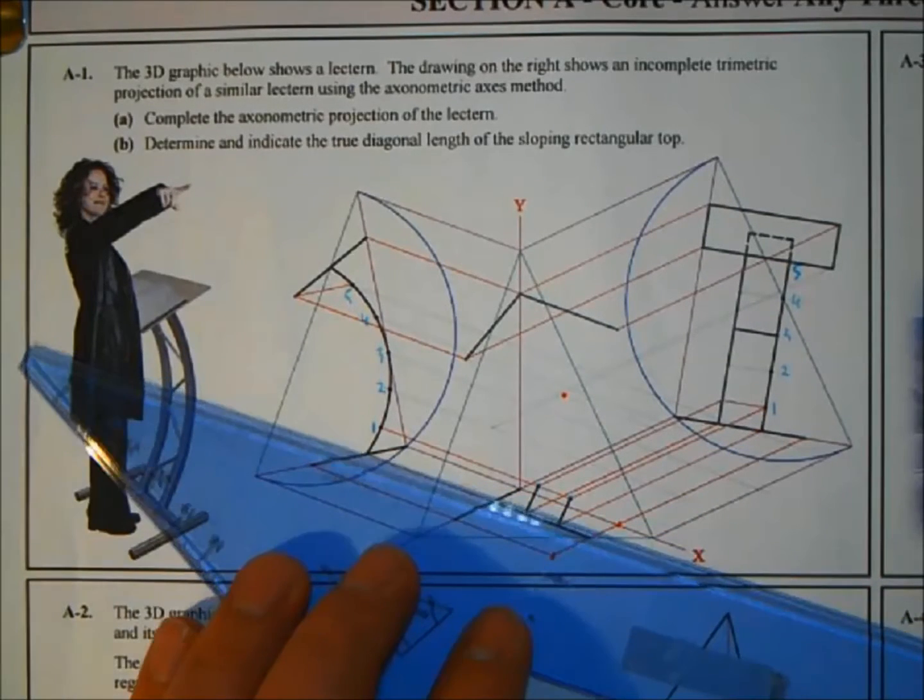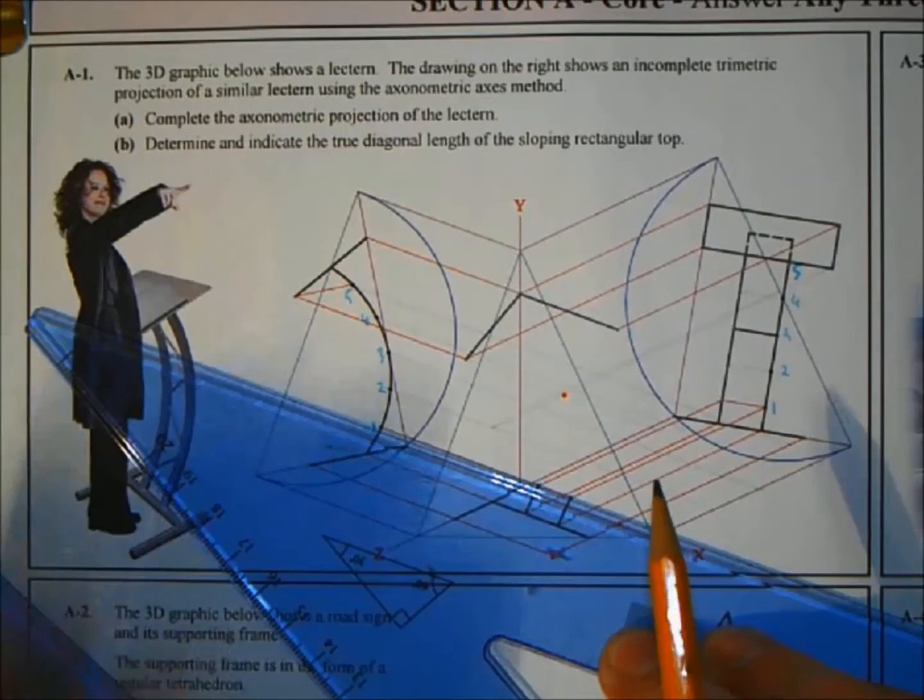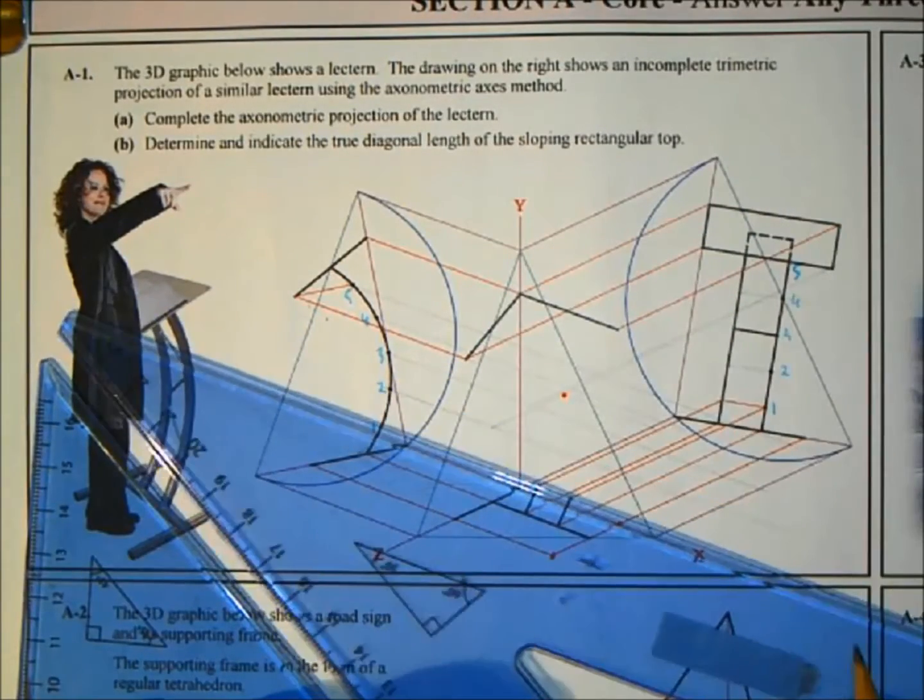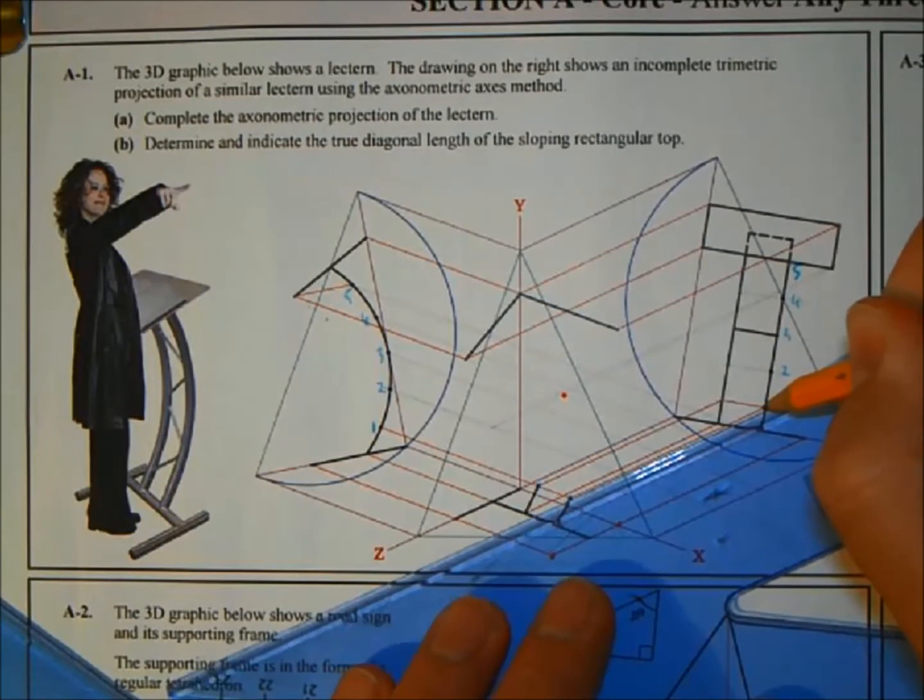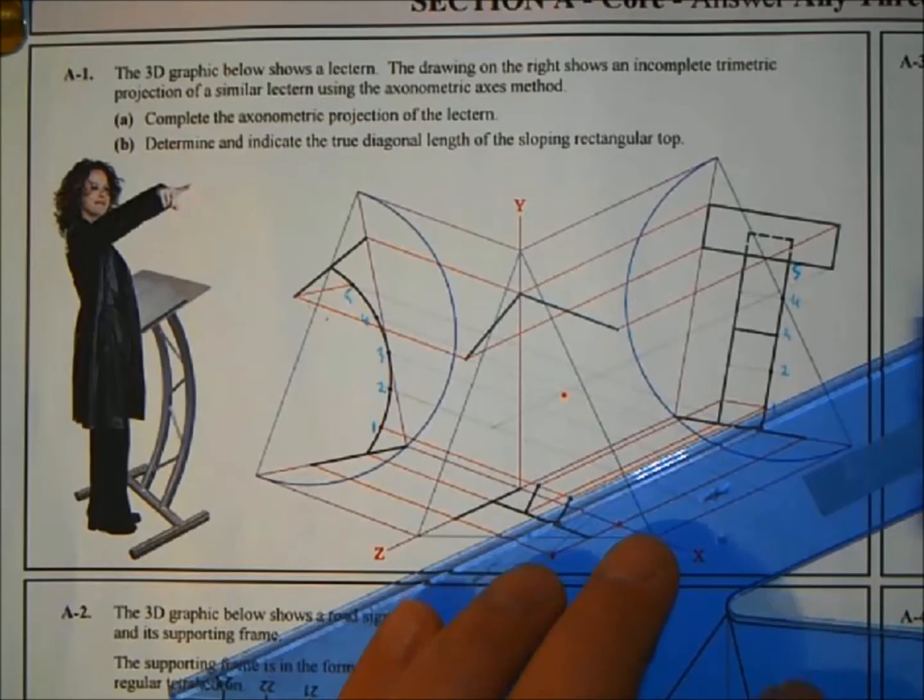Project from the end view, which I've already done, and then project point 2 down from the elevation.